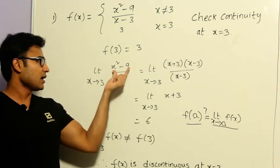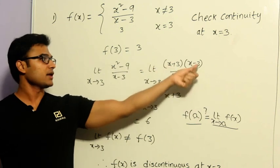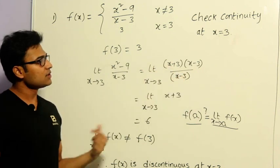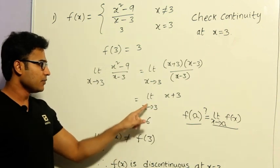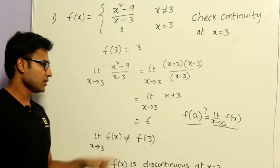So what is factorization? I am just writing it like this and then I can cancel out these two. Now it is no more in 0 by 0 form. Now we got x plus 3. Now, limit x tends to 3 of x plus 3 is nothing but 6.